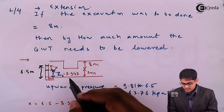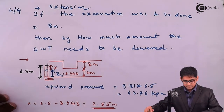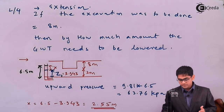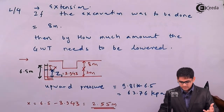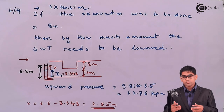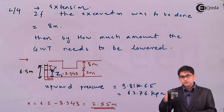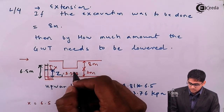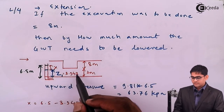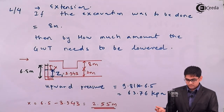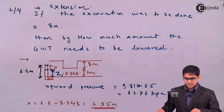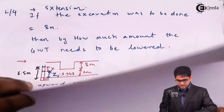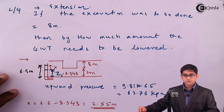Therefore the groundwater table needs to be lowered by 2.55 meters to safeguard the soil from bottom heaving. This concludes problem number four in the effective stress principle. The key takeaway is: if you want to excavate deeper, you must lower the groundwater table to prevent pore water pressure from pushing soil upward, causing boiling or heave conditions.